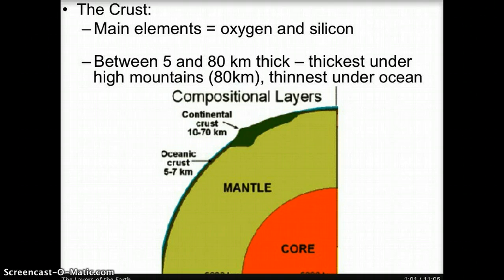You can think about the crust like the skin of an apple — it is very thin and on the surface. In this diagram, the crust is represented by the dark green color. Do you see how thin it is compared to the other layers?